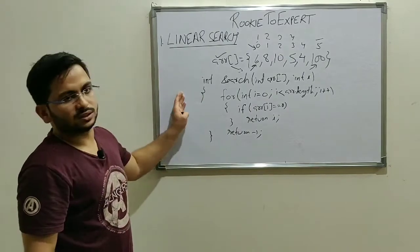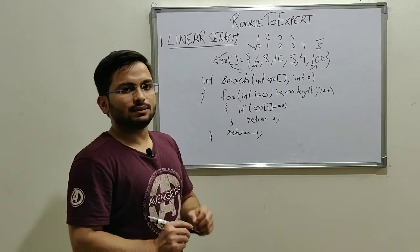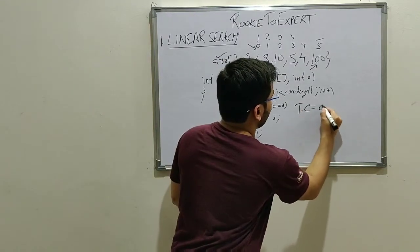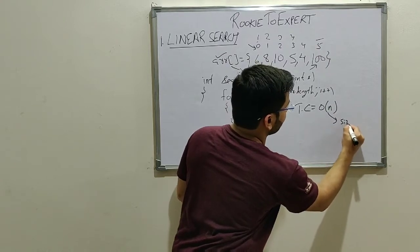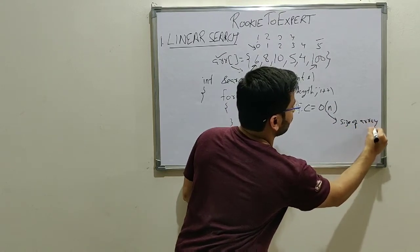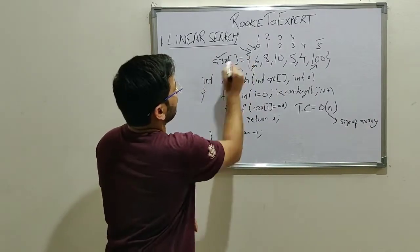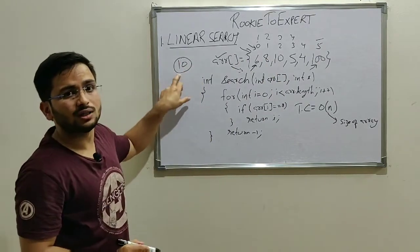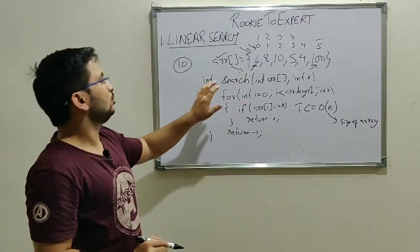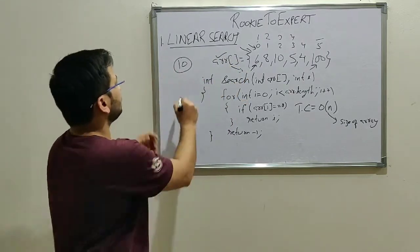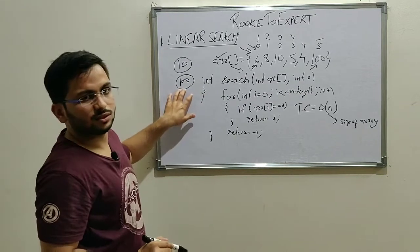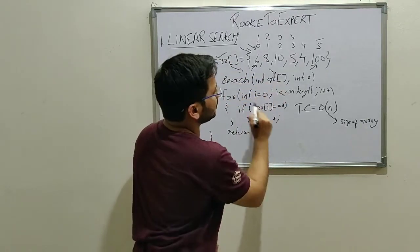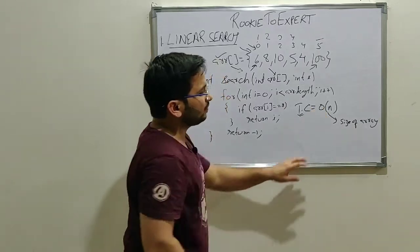So time complexity of this algorithm, as you can see, should be order of n, where n is the size of array given to us. Why? Suppose the size of our array is 10. So in the worst case scenario, we may have to search all the elements till the end to find the element. Suppose it is 100. So we need to search 100 elements. So it is directly dependent on the size of the array. So whatever is the size of the array, that will be our time complexity. That is big O of n.